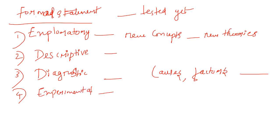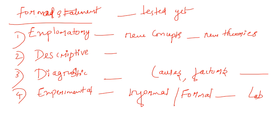The fourth type is experimental design. Experimental design can be informal or formal, and involves a huge amount of money for the lab setup. This is the most difficult type of research design to practice.